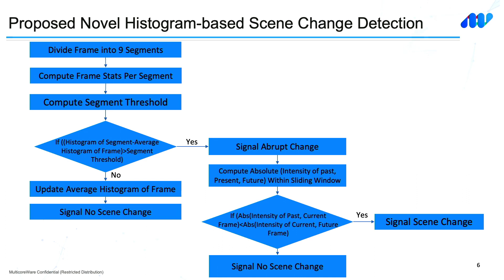In the case where we observe an abrupt change in the scene, we need to differentiate between a scene transition and an actual scene cut. For that, we consider a sliding window of three frames: past, current, and future. We compute the absolute intensity difference between current and past, and between current and future. If the absolute intensity difference of past and current is small and the absolute intensity difference of current and future is high, there is an actual scene cut; otherwise, it is just a scene transition.